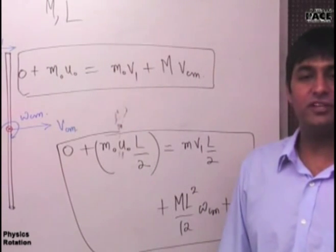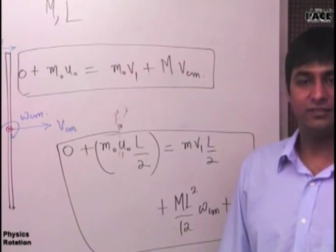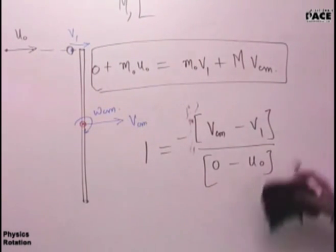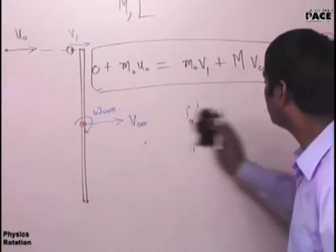Now, has anyone written coefficient of restitution equation correct? Please raise your hand those who have written it correct or can write it correct. Vcm plus omega L by 2 minus V1 upon U not. Very good. Who is this boy? Sumit. Very good. Correct.